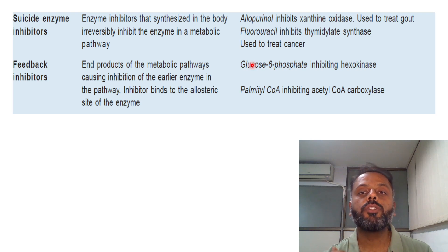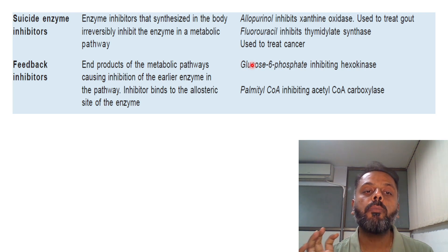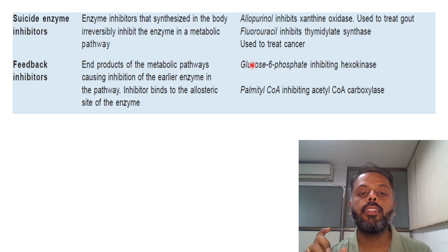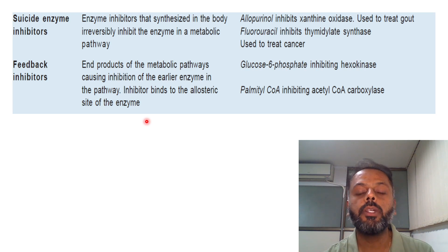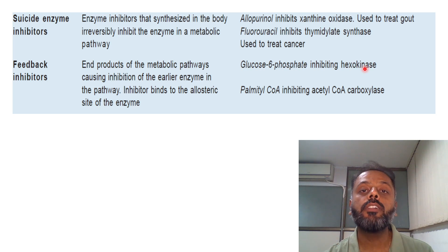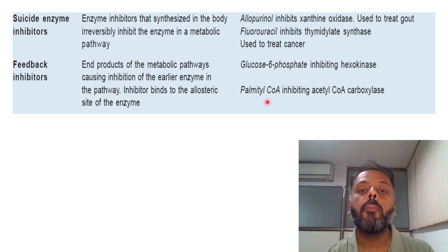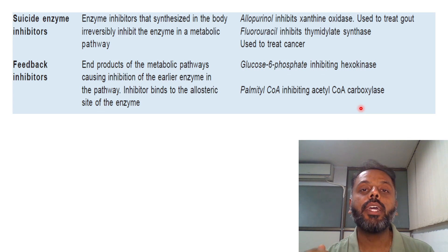Another type of enzyme inhibition is feedback inhibition. In feedback inhibition, the end product of a particular metabolic pathway causes the inhibition of an earlier enzyme in the pathway. The inhibitor binds to the allosteric site of the enzyme. Examples of feedback inhibitors include glucose-6-phosphate inhibiting hexokinase, heme inhibiting ALA synthase in the heme synthesis pathway, and palmitoyl-CoA inhibiting acetyl-CoA carboxylase.